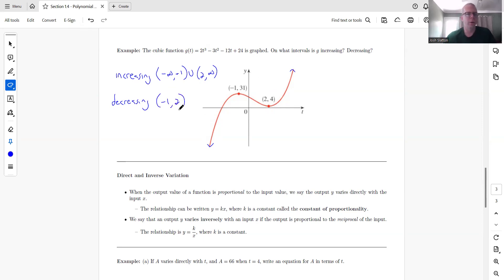And that is it. And so we always have parentheses with these because at negative one and at two, it is not increasing or decreasing. It is changing. So we don't ever include those points.